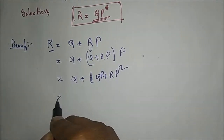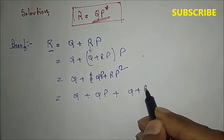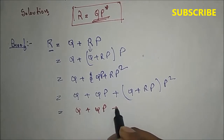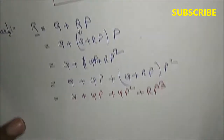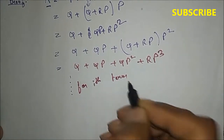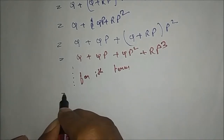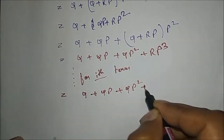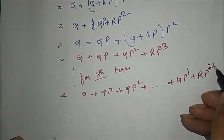After multiplication, again I'll put the value of R as Q plus RP squared. So we get Q plus QP plus QP squared plus RP cubed. For the ith term, after putting the value of R in Q plus RP, we'll get Q plus QP plus QP squared plus dot dot dot plus QP^i plus RP^(i+1).